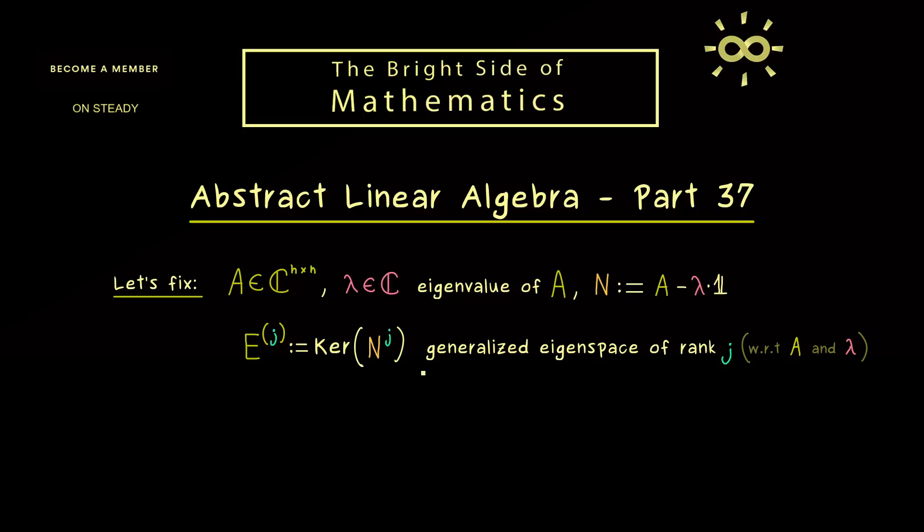More concretely, we will talk about the dimensions we can have for these generalized eigenspaces. Hence, equivalently, we could also talk about the range of N^j, because the dimensions are connected by the rank-nullity theorem. In that sense, let's also introduce a capital R to denote these subspaces given by the range. And with that we finally have all the definitions we need. And maybe here as a reminder, j can be any natural number and also zero.